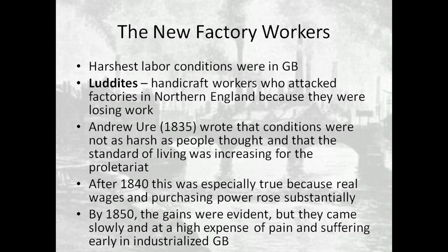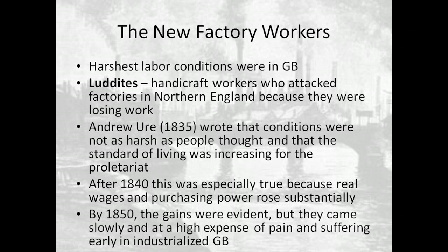Andrew Ure, in the middle of the 19th century, wrote that conditions were not as harsh as people thought and that the standard of living was actually increasing for the working class. This is true after about 1840, because then real wages and purchasing power actually did rise. However, before 1840, the standard of living did not substantially increase for the lower classes, the proletariat. By 1850, the gains were evident — but they came slowly and at a very high cost of pain and suffering early on in industrialized Great Britain.